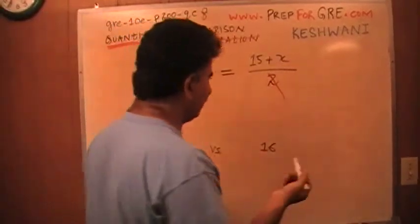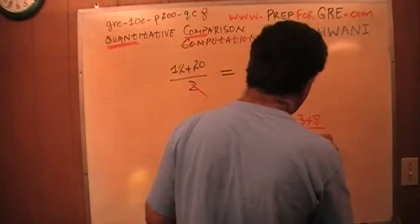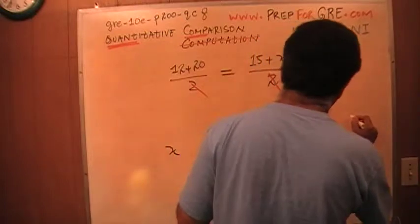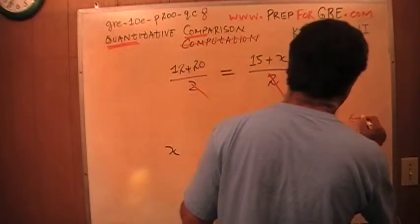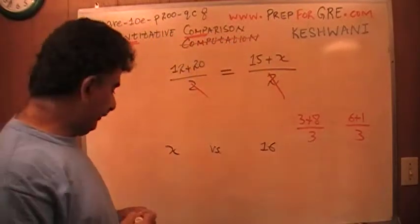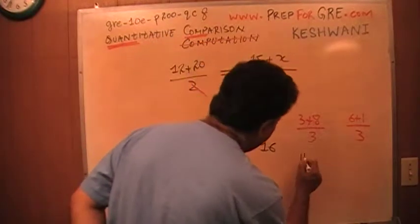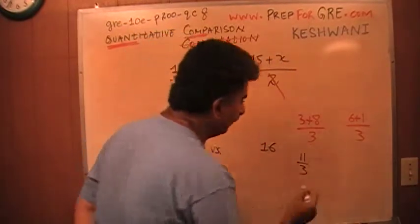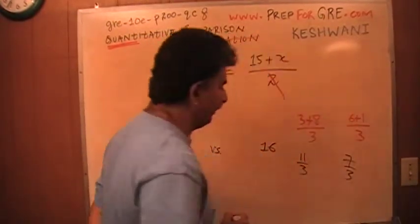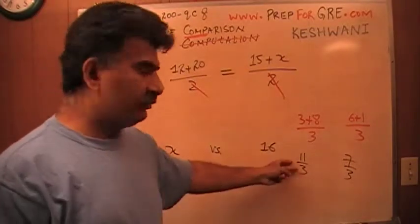For example, if you ask me to compare 3 plus 8 divided by 3 versus 6 plus 1 divided by 3. If I'm not quick enough and if I'm not smart enough, I could sit there and waste my time and figure out what is 11 divided by 3. And then again waste my time and figure out exactly what 7 divided by 3 is. And then I will realize that this quantity is bigger.